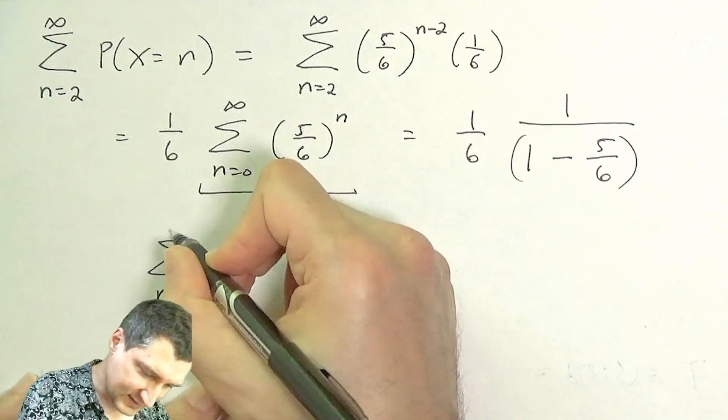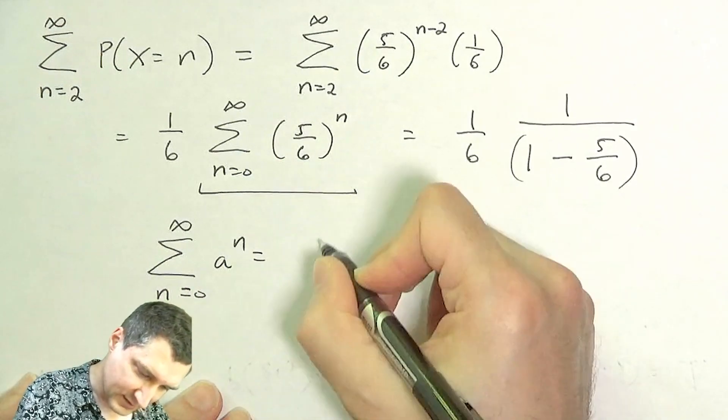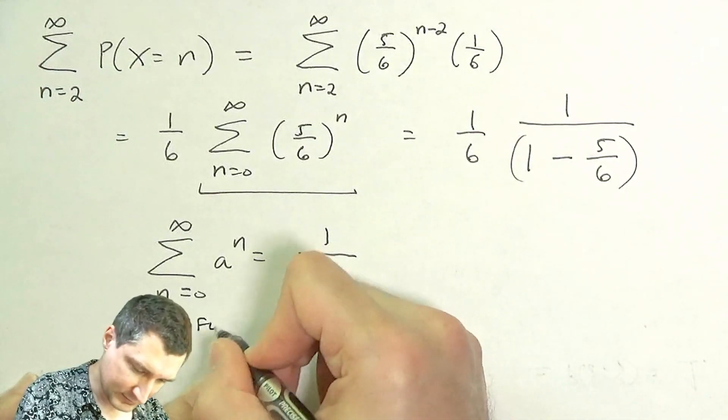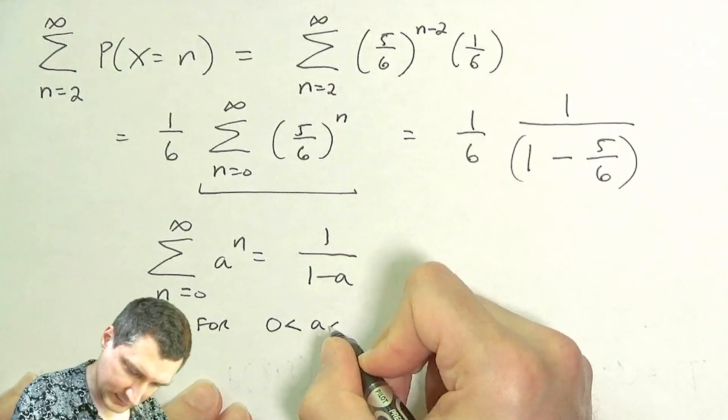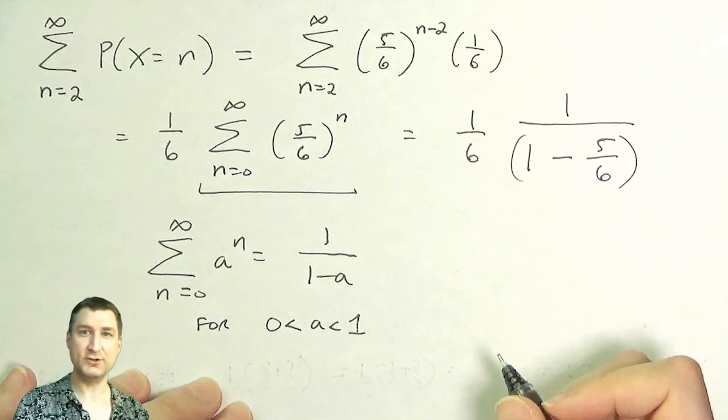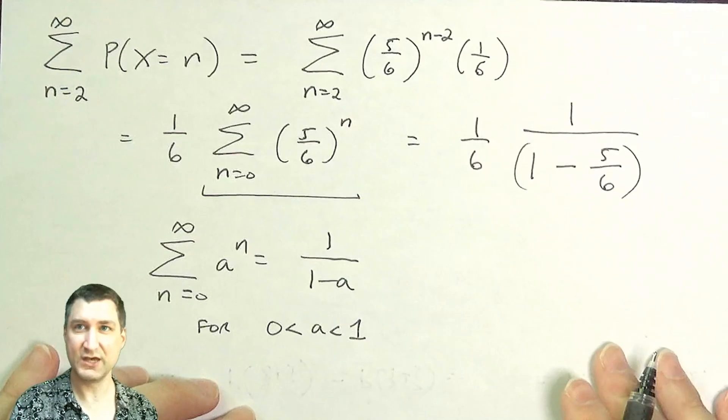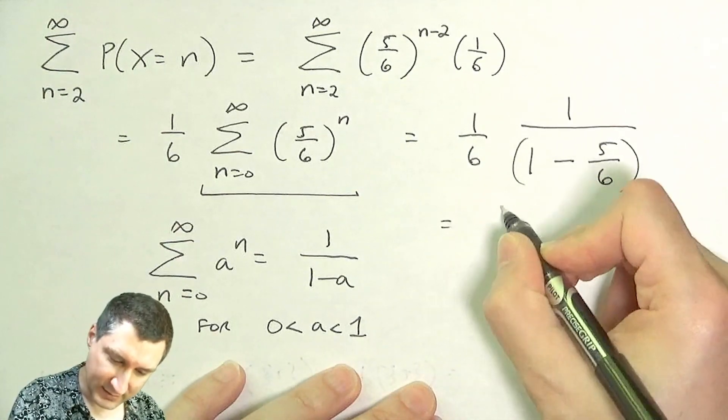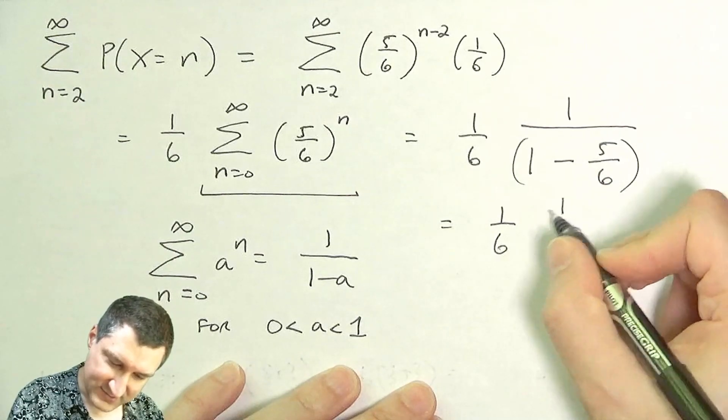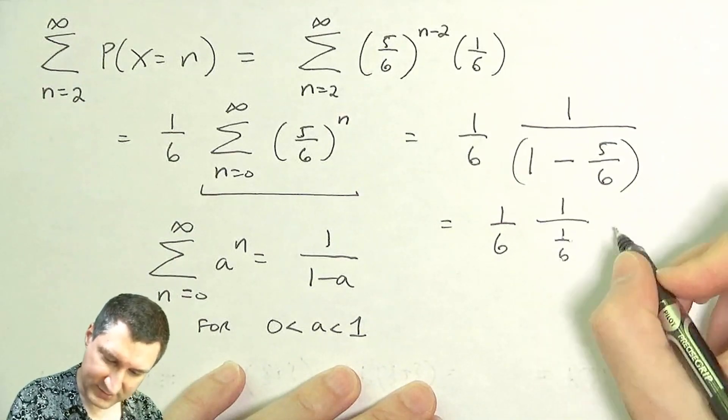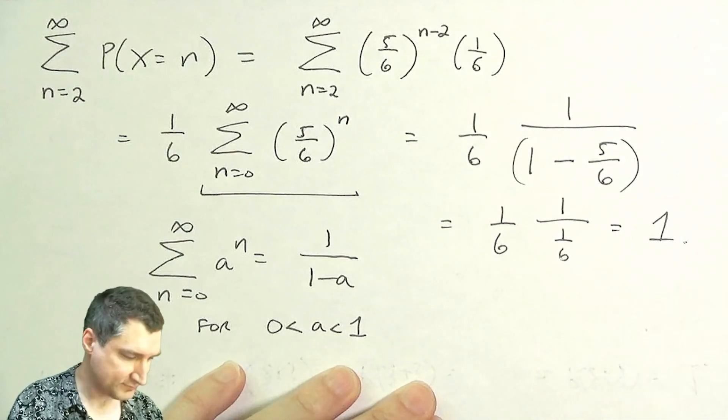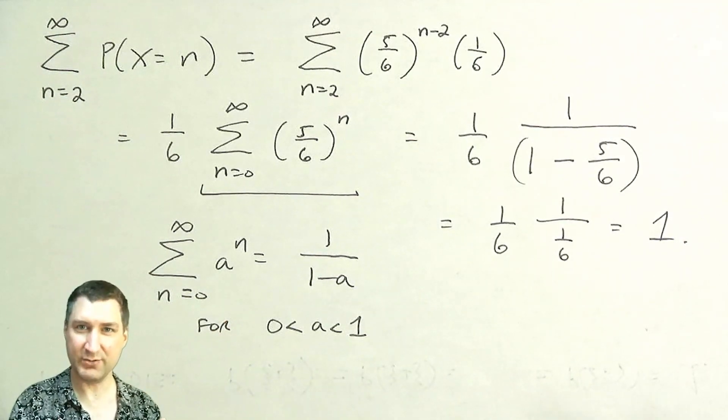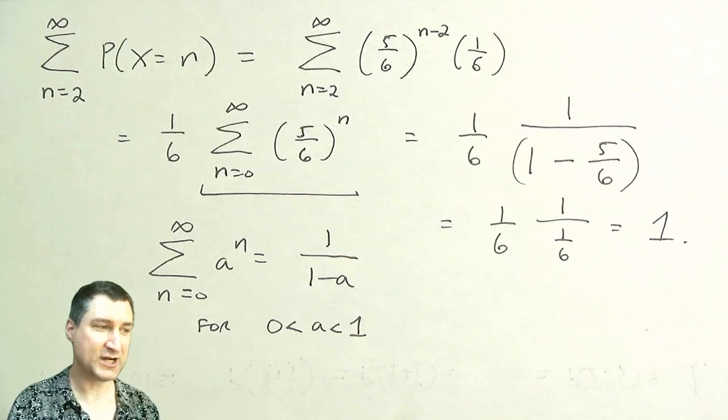When a is between 0 and 1, that's a good thing to remember. If you took a class like signals and systems, you probably already had that written down somewhere. And now I can say, okay, my result in the special case is 1 over this, and this is just equal to 1. So that's good. We showed that we got a sum of probabilities equaling 1.